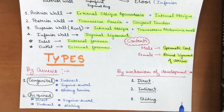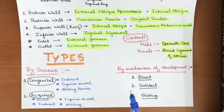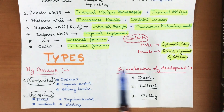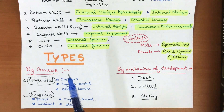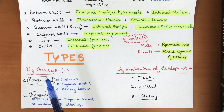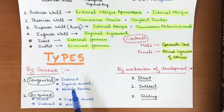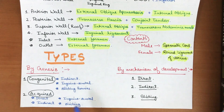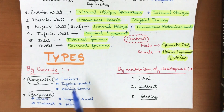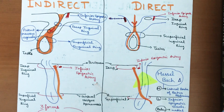There are two main classifications of inguinal hernias: by genesis and by mechanism of development. By genesis, hernias can be congenital or acquired. By mechanism of development, they can be direct, indirect, or sliding hernias. In congenital hernias, indirect inguinal, inguino-scrotal, and sliding hernias can occur. An important point to remember is that direct hernias are never congenital — they are always acquired.